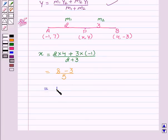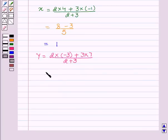Now we find the value of y equal to m₁ into y₂, that is 2 into (-3), plus m₂ into y₁, that is 3 into 7, upon m₁ plus m₂, that is 2 plus 3. This equals -6 plus 21 upon 5. This is equal to 15 upon 5, equal to 3.